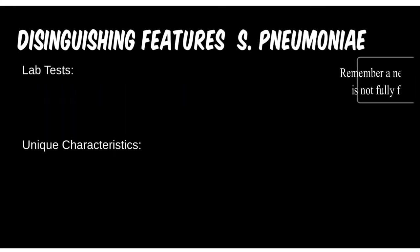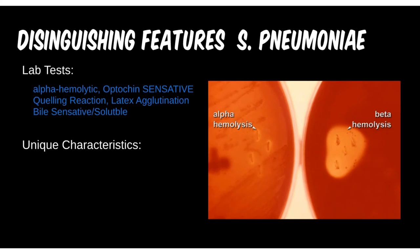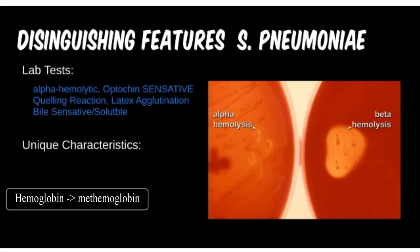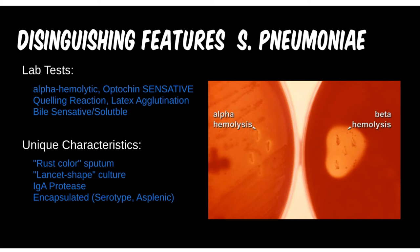Strep pneumo gives us our first glance at alpha hemolysis — a partial or green hemolysis caused by oxidation of hemoglobin to methemoglobin by bacteria. It is also non-typable by Lancefield, so it doesn't belong to a group like the others do. Test questions will often state this bacteria is lancet-shaped under the microscope — think Strep pneumo whenever you hear this. Also note the salmon-colored sputum seen in Staph aureus versus the rust-colored sputum seen here — it is very easy to mix these up.